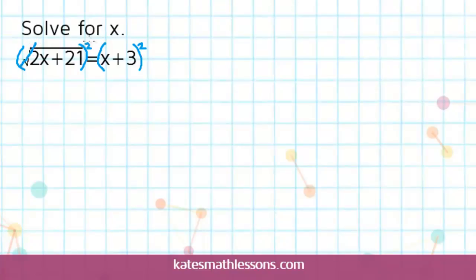So this square root sign goes away, it got canceled by the squared here. So all that's left over here on the left hand side is what was underneath the radical, the 2x plus 21.